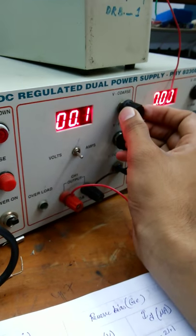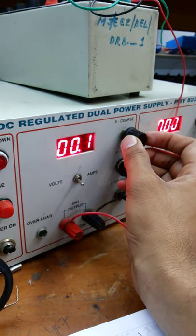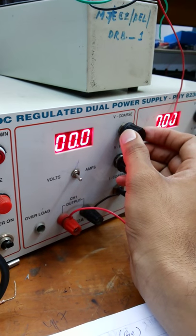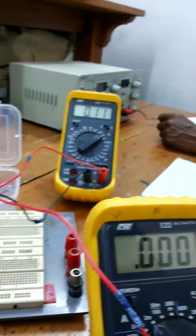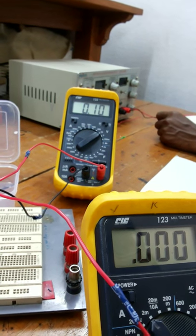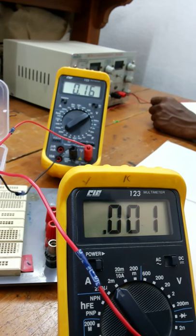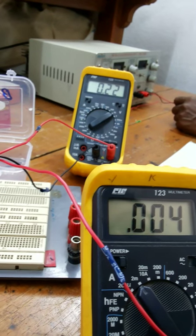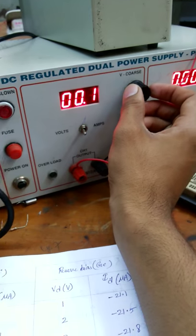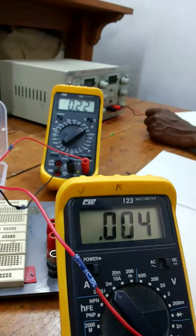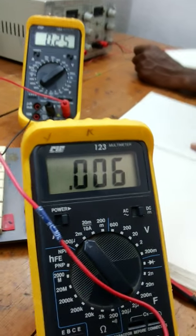So we are changing the value in the DC regulator dual supply and taking the value from the voltmeter or multimeter. As you can see, the values are changing. Change the values in the DC supply and see in the voltmeter and take the values of the ammeter as the table here.